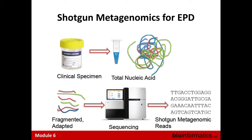Once you have that jumble of host, commensal, and possibly pathogen nucleic acid, you convert any RNA to cDNA, then fragment and adapt it just like generating a normal library for a cultured isolate. You put it through your sequencer and generate reads. You'll generate quite a large number of reads — a regular bacterial genome is about 5 million base pairs, so for 10x coverage you need to generate 50 million base pairs worth of reads.